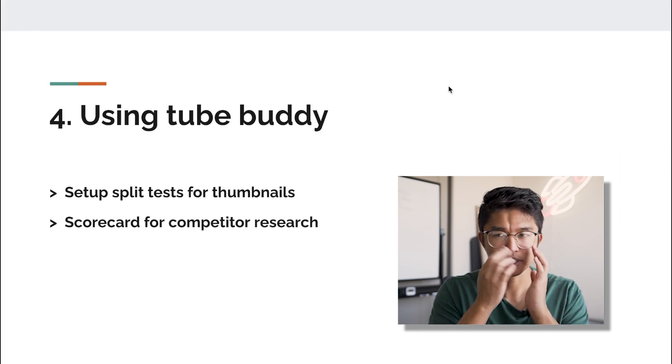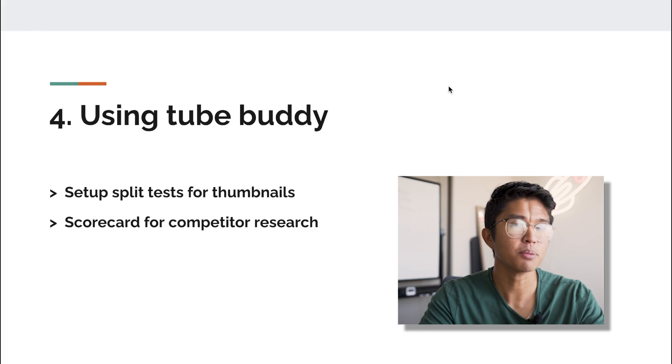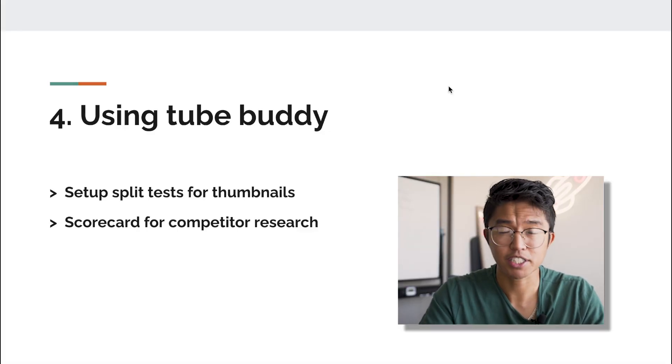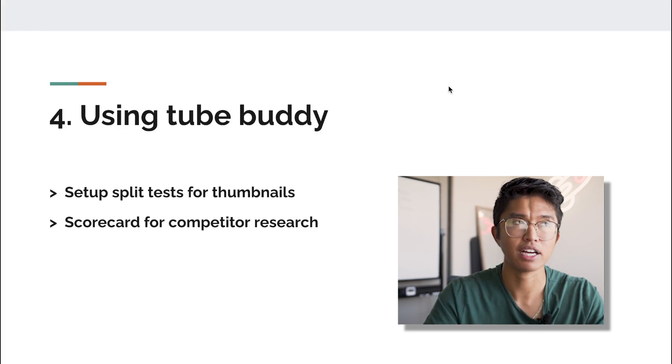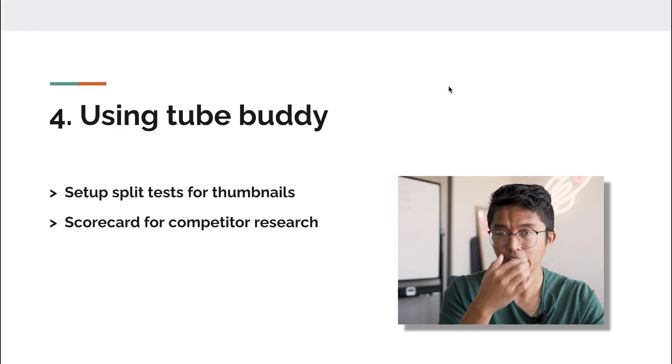With TubeBuddy's most expensive plan, called the Legend plan, you can set up split tests on your thumbnails. It's basically giving a single video two chances to work by having two thumbnails alternate every 24 hours. TubeBuddy has a statistical significance goal where once it determines one thumbnail is 95% likely to be better, it automatically sets that as the permanent thumbnail. I've had videos go viral because of TubeBuddy split tests — it's so worth the money.